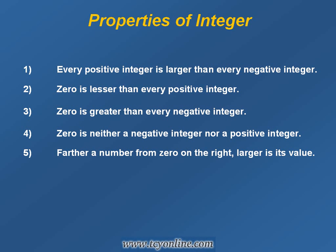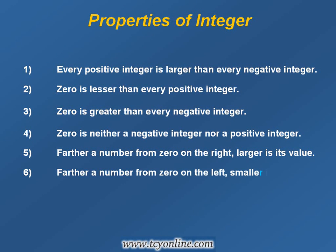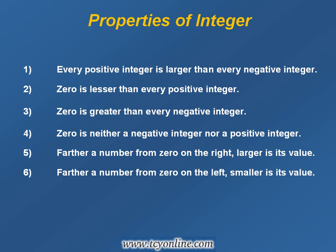Property 6 states that the farther a number is from 0 on the left side of the number line, the smaller its value. For example, negative 7 is farther from 0 as compared to negative 4, so negative 7 is lesser than negative 4.